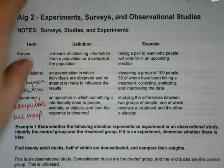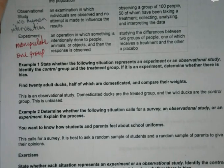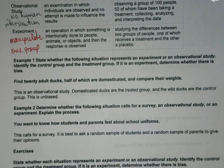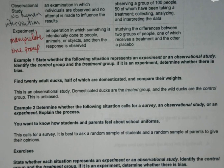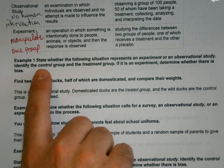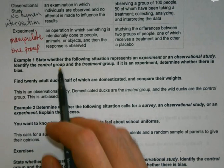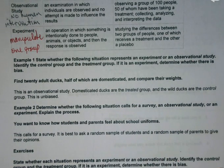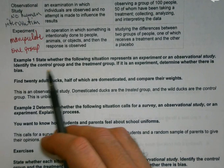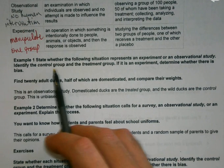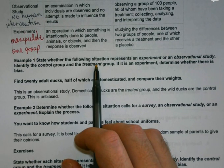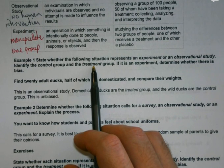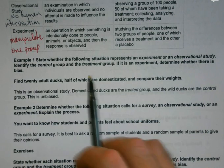For an example: we've got 20 adult ducks, half are domesticated and half aren't, and we're going to compare their weights. We need to check whether each situation is an experiment or an observational study — whether we manipulated something or we were just watching. We identify the control group and the treatment group. The one having something done to it would be the treatment group. And if it's an experiment, we determine whether there is bias.